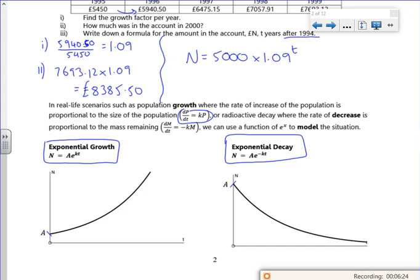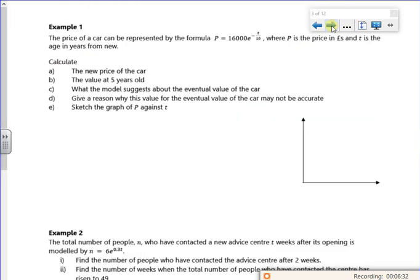Let's have a look at the next page. I've got example one. I'm going to do this example and then I'll stop. It says the price of the car can be represented by this formula, where P is the price in pounds and t is the age in years from new. Calculate the new price.